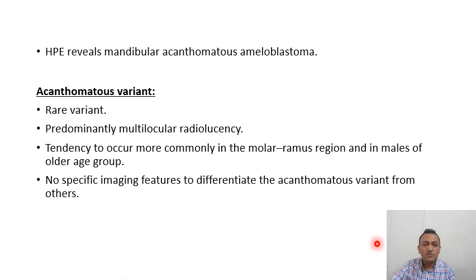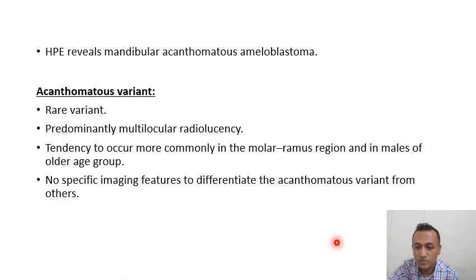Histopathology reveals mandibular acanthomatous ameloblastoma. Regarding the acanthomatous variant, it is a rare variant predominantly showing multilocular radiolucency on imaging, with a tendency to occur more commonly in the molar-ramus region in older male patients. There are no specific imaging features to differentiate the acanthomatous variant from others.